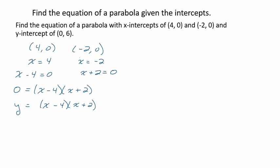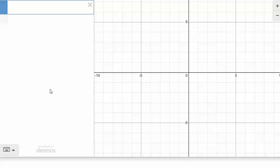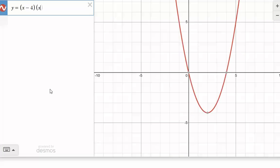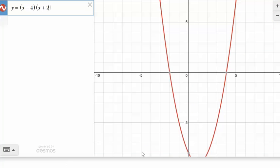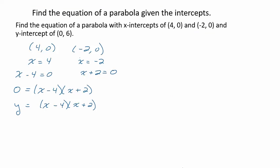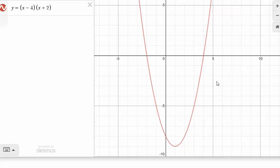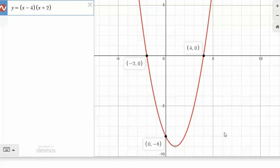So I want to go take a look at Desmos, and I want to put our equation in here. So we have y = (x - 4)(x + 2). All right. And this is what our graph looks like. So notice we have our x-intercepts here at -2 and positive 4, just like we want. But for this graph, we have a y-intercept of -8.